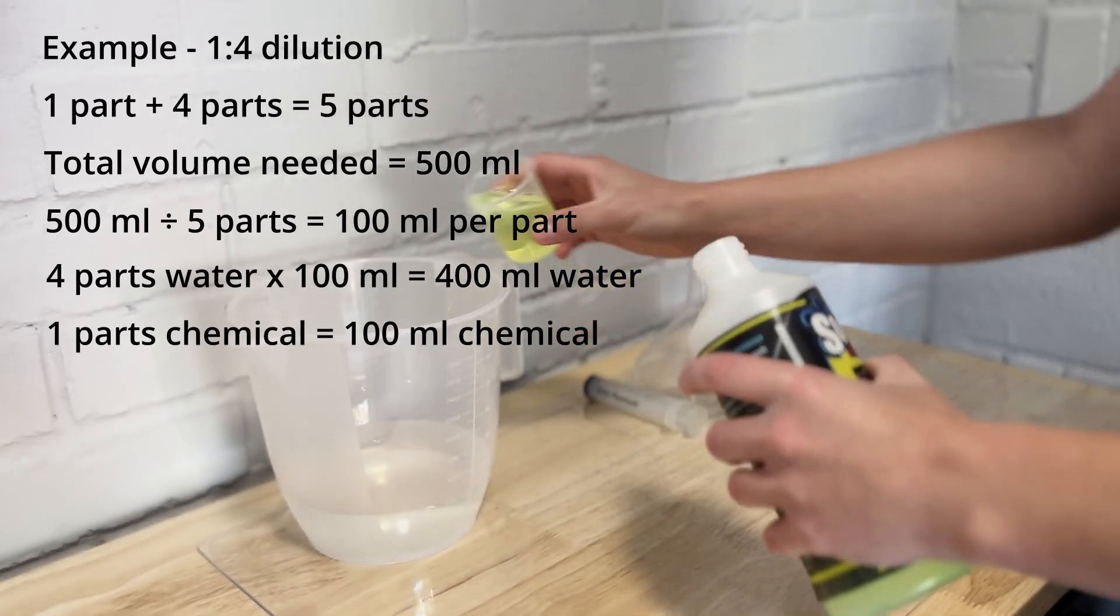So this is 50 ml so I'm just going to measure up to the line and do a couple of these. And that is the 1:4 ratio sorted for that citrus product and it is now ready to go in my IK sprayer.